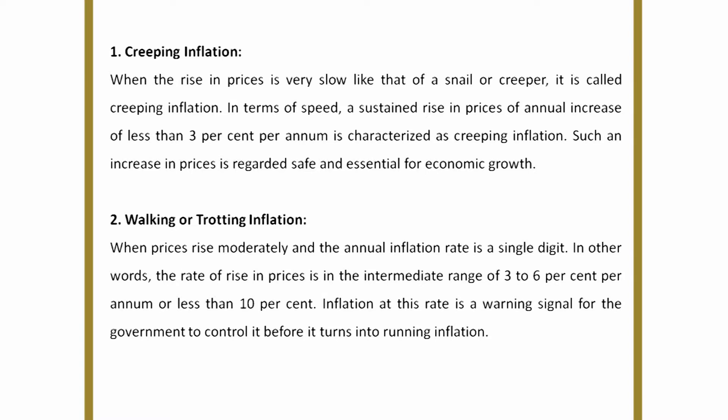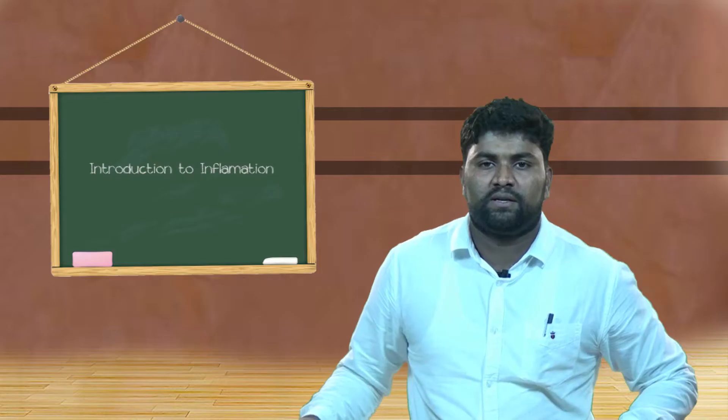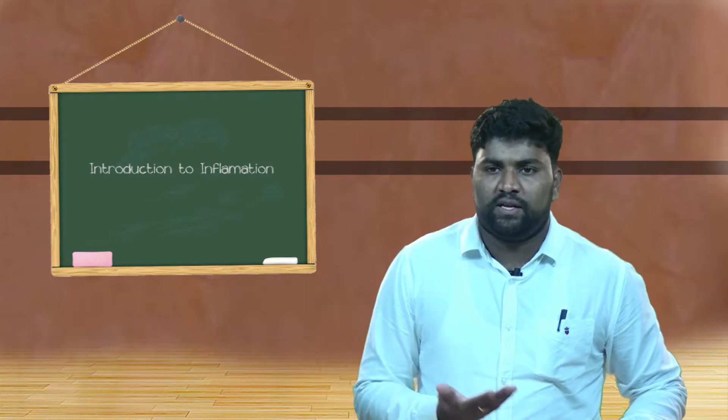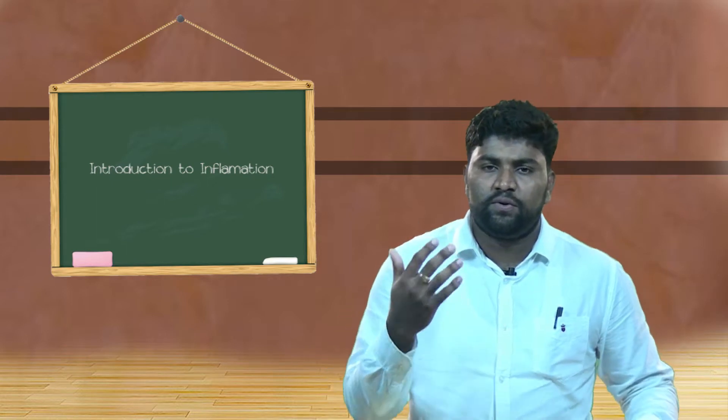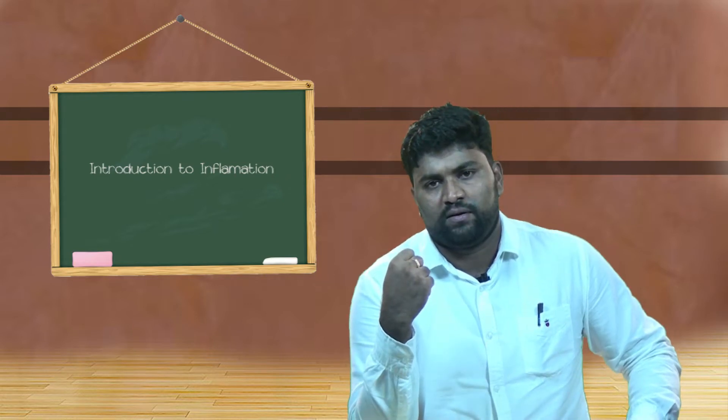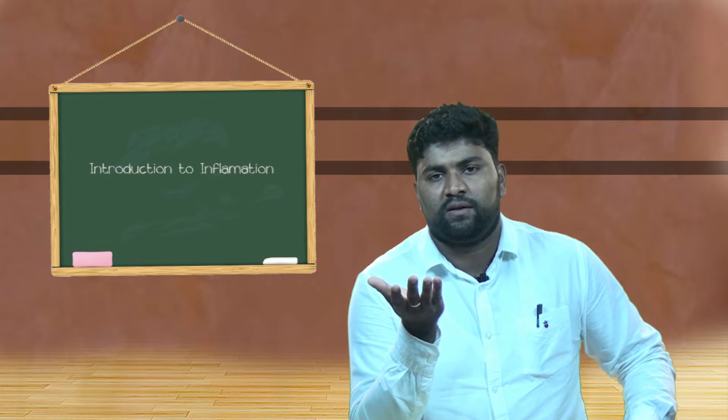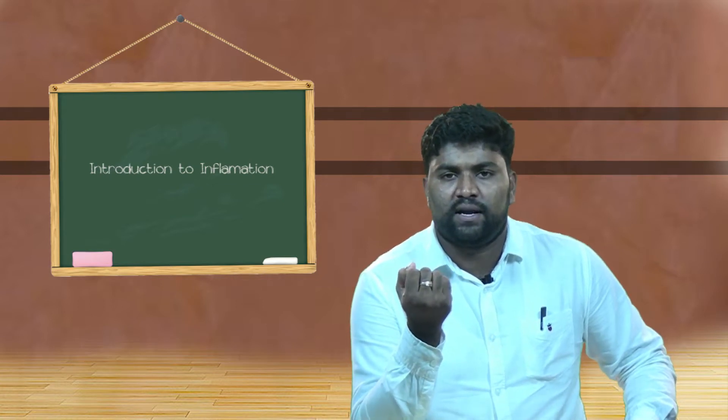Another form is walking or trotting inflation. Walking or trotting inflation is the next stage of creeping inflation. Here, inflation takes place from 3 percent to 6 percent, and it should be less than 10 percent. It means that this kind of inflation may go up to 9 percent. When economy reaches up to this kind of inflation, it is the duty of any economy to stop it with their monetary power or monetary policies. Because when economy is unable to stop this kind of inflation, then it may become very harmful for the economy to survive.